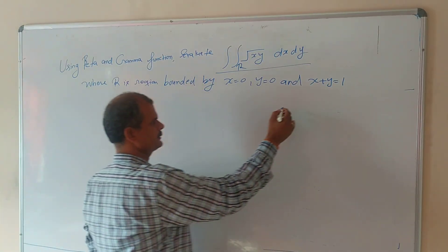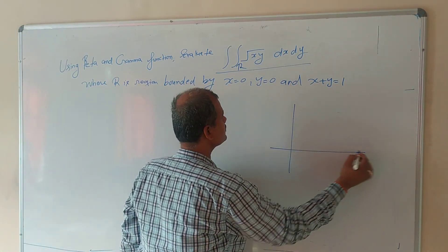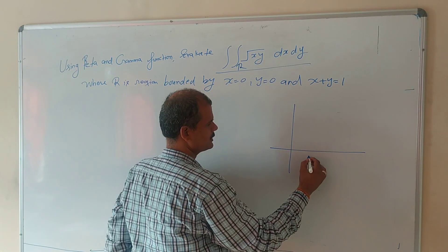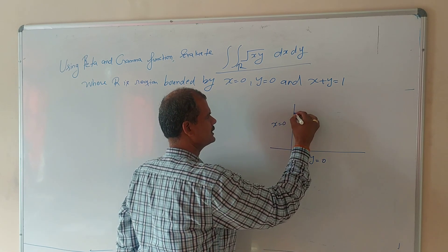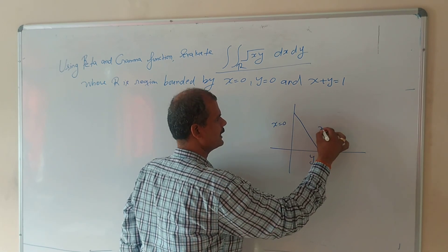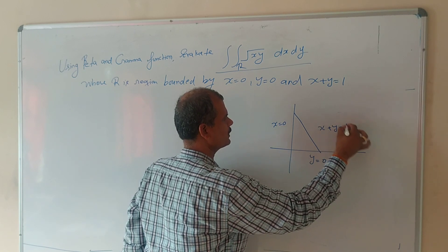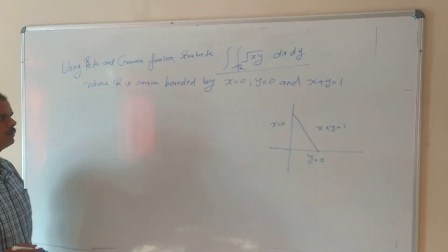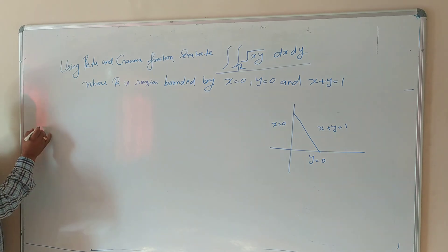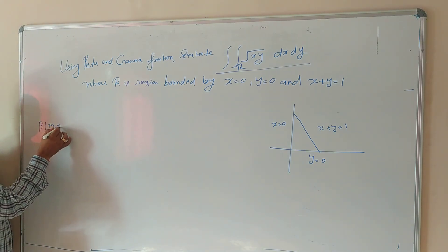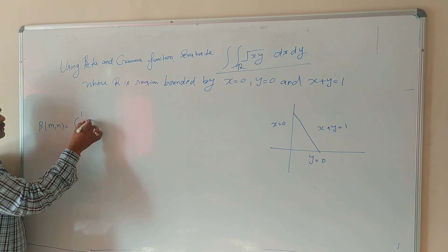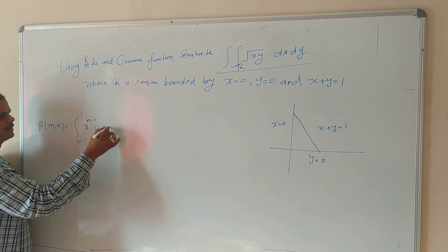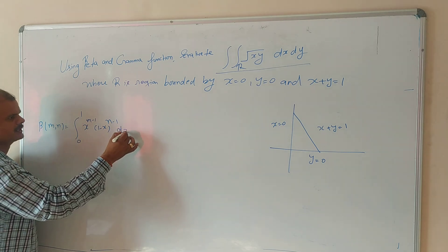Let us see what is the region. The region is bounded by y equal to 0, x equal to 0 — this is the triangular region — and x plus y equal to 1. Before solving this, we should know what is the beta function. Beta(m, n) equals the integral from 0 to 1 of x^(m−1) times (1−x)^(n−1) dx, where m and n are both positive.